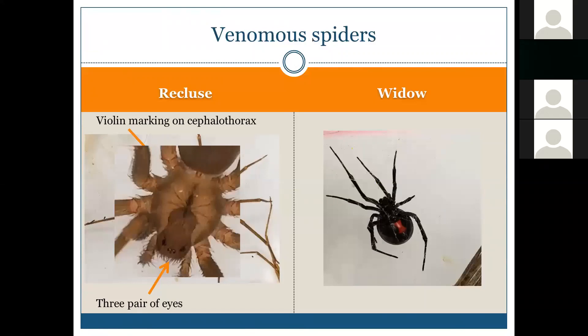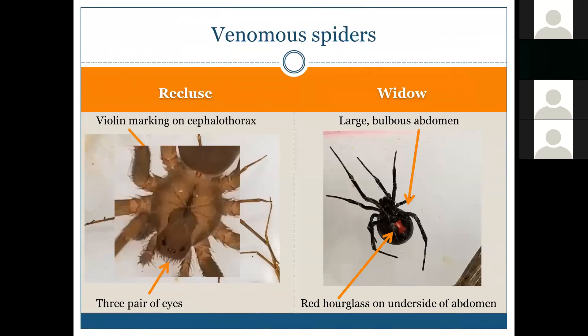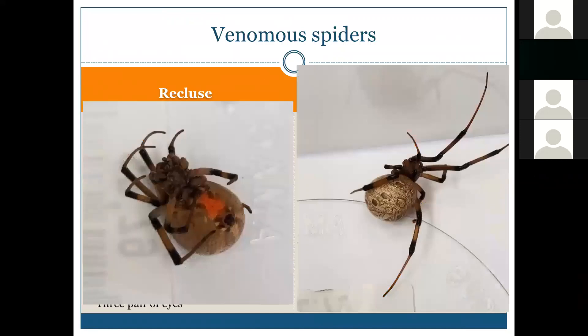Widow spiders have a large bulbous abdomen in the female stage — the male's is smaller — and a red hourglass on the underside of the abdomen. The southern black widow is the most common, but there are also western, northern, and brown widows in the United States. The brown widow has a more mottled color but still has the hourglass on the underside.